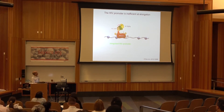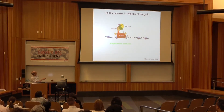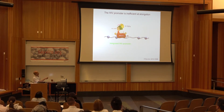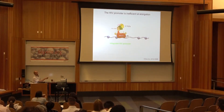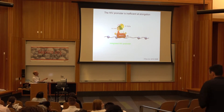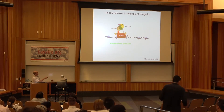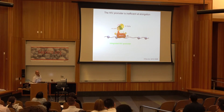There is an elongation factor called P-TEFb, which is recruited at the initiation complexes but held in an inactive state by the 7SK-SNRP complex. P-TEFb is composed of a cyclin and a CDK. The kinase is responsible for phosphorylating RNA polymerase, and it cannot do so when the inhibitor, the 7SK-SNRP, is bound to the complex.